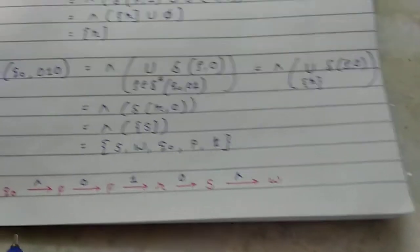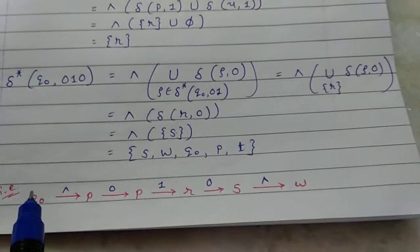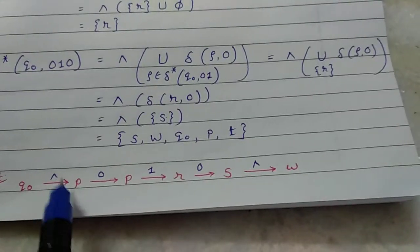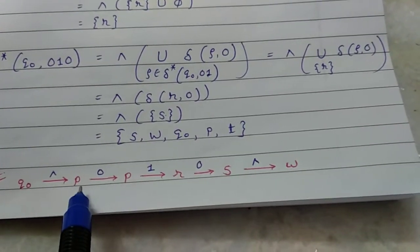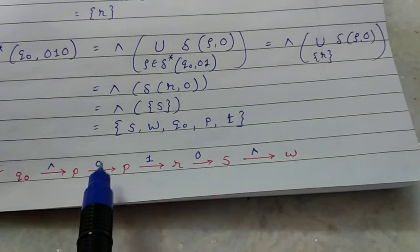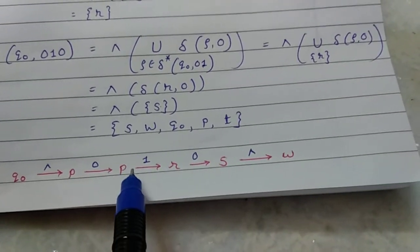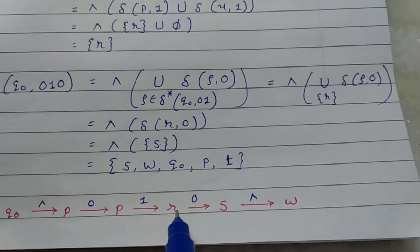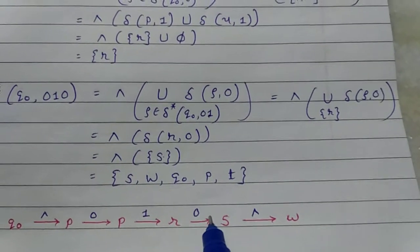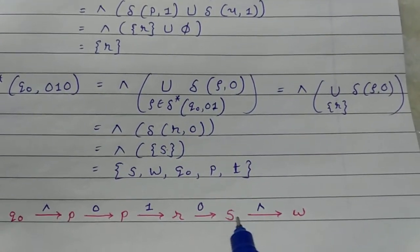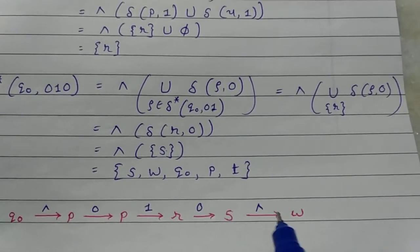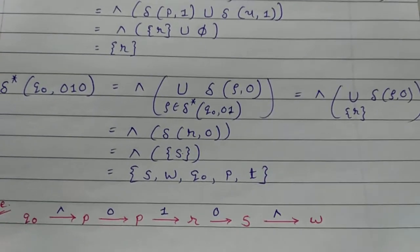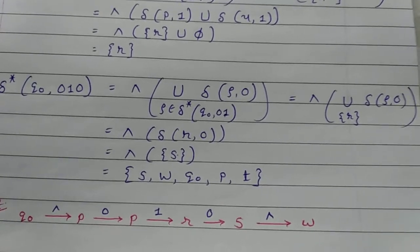For example, if you are at Q0: using epsilon you reach P, from P on input 0 you reach P, from P on input 1 you reach R, from R on input 0 you reach S, and from S via epsilon you reach W. Thank you.